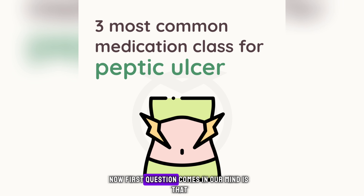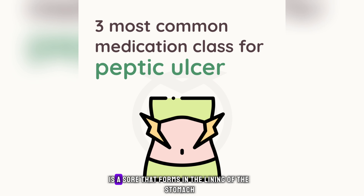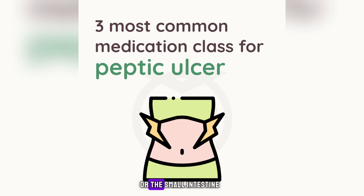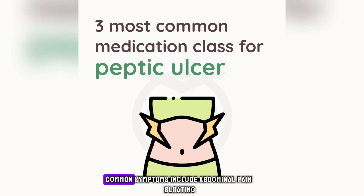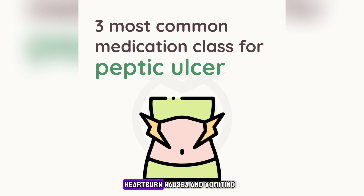The first question that comes to mind is: what is peptic ulcer? Peptic ulcer is a sore that forms in the lining of the stomach or the small intestine. Common symptoms include abdominal pain, bloating, heartburn, nausea, and vomiting.